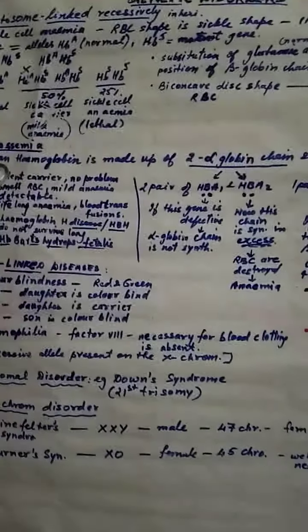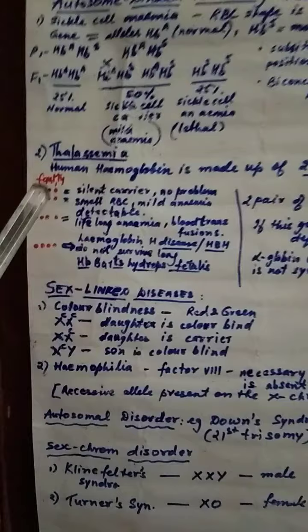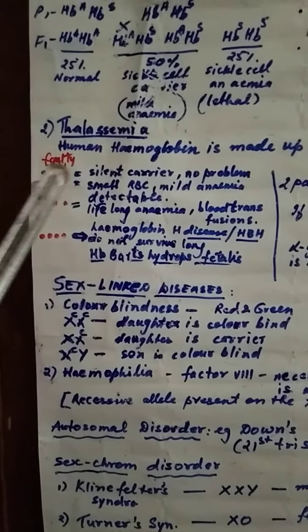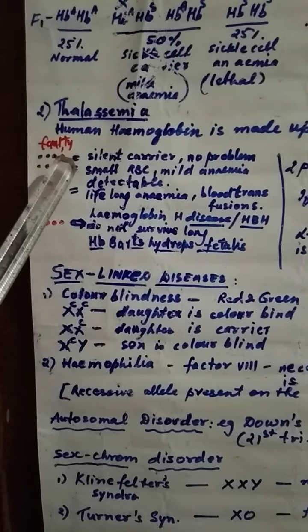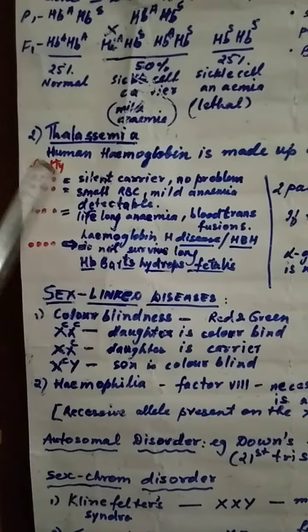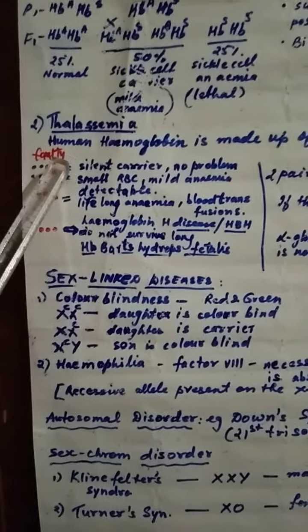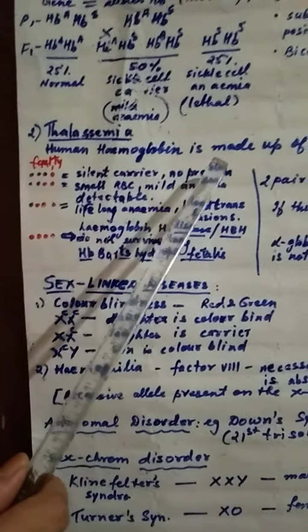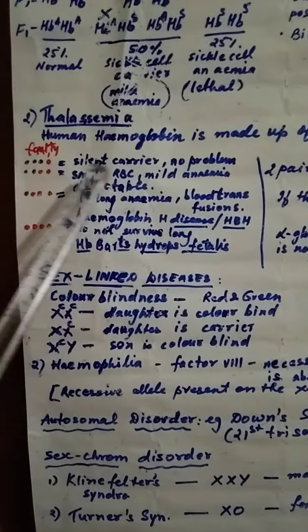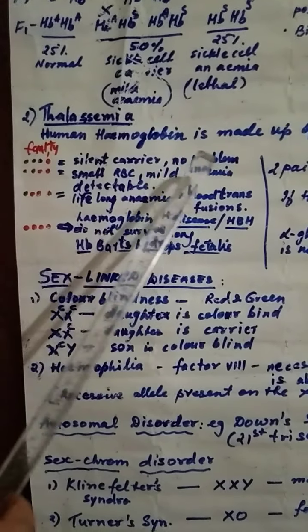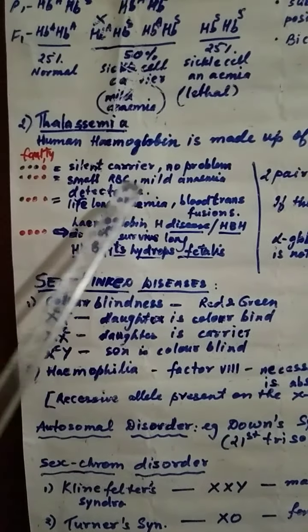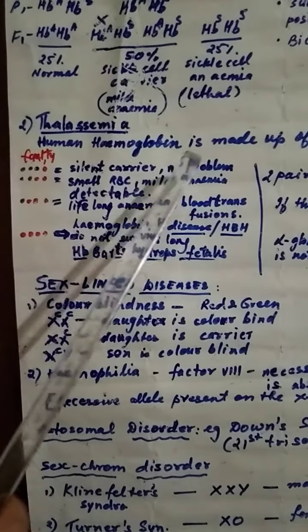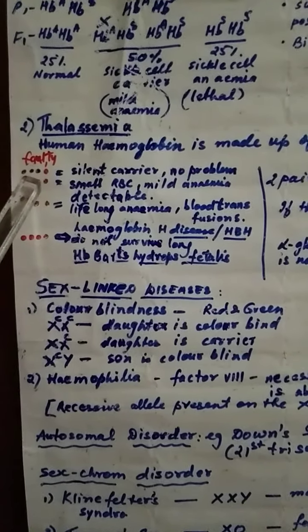We can also explain with this. Suppose there are 4 genes, you know alpha chain is controlled by 4 genes. Red is shown faulty. If one is faulty, then they are silent carrier, no problem in them. They will have small RBCs, mild anemia they will suffer and it can be mild anemia. The second case, suppose 2 genes are defective, they will have small RBCs, mild anemia and they can be detected by blood test also.